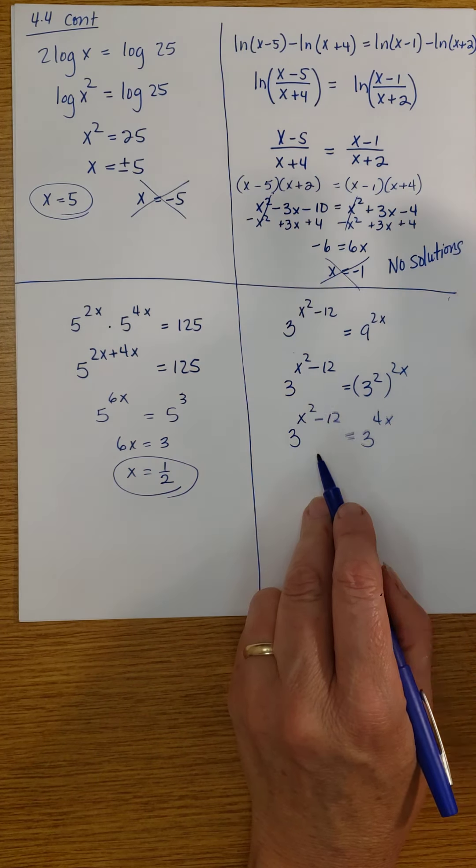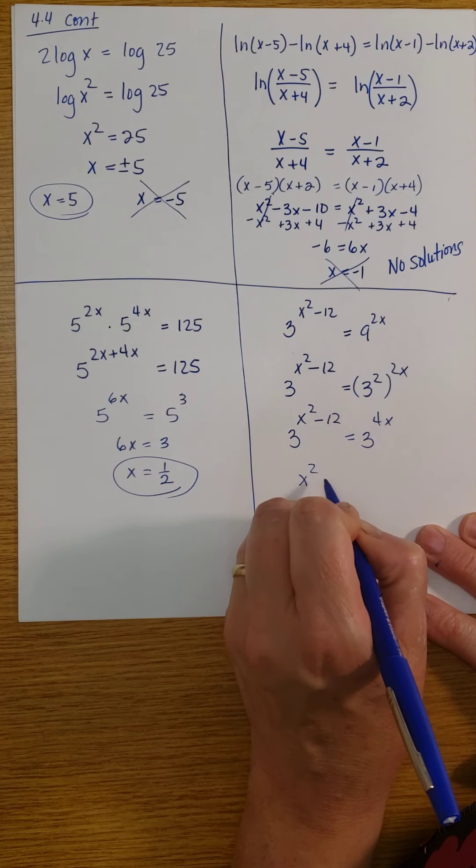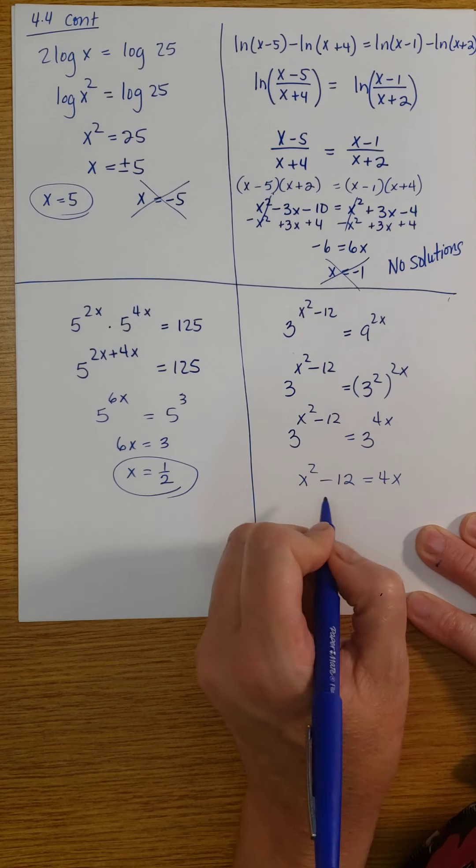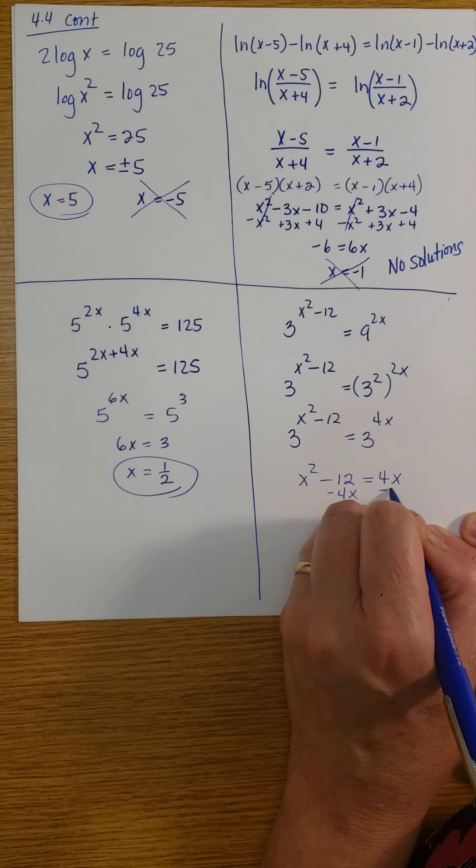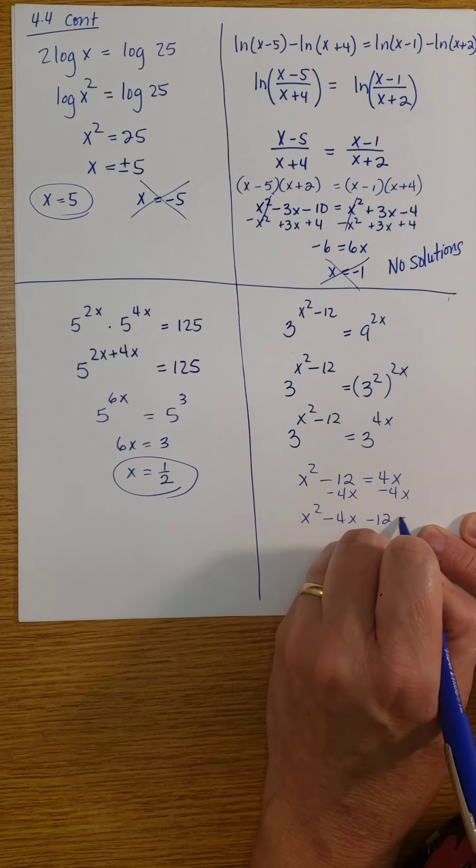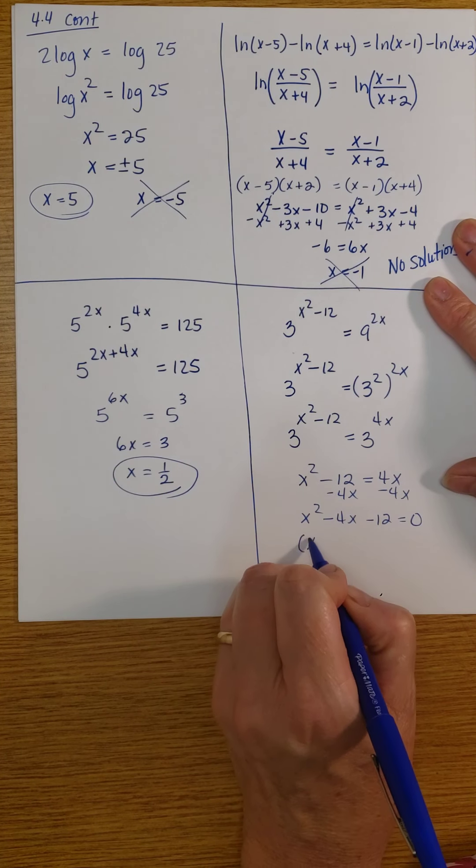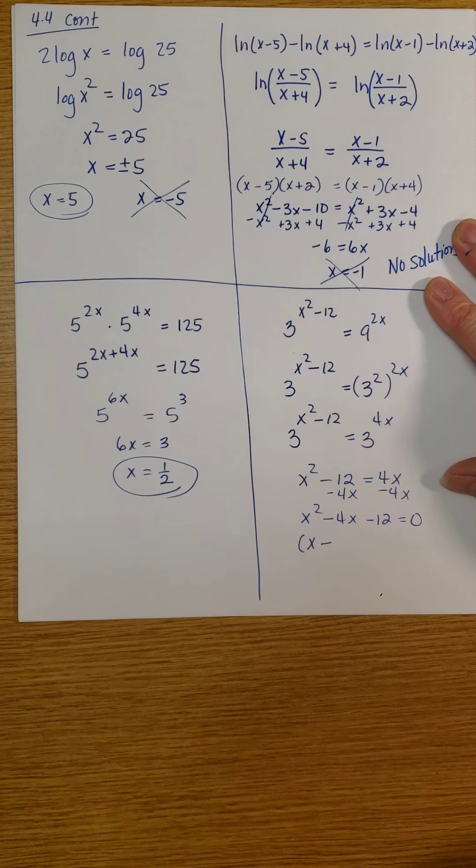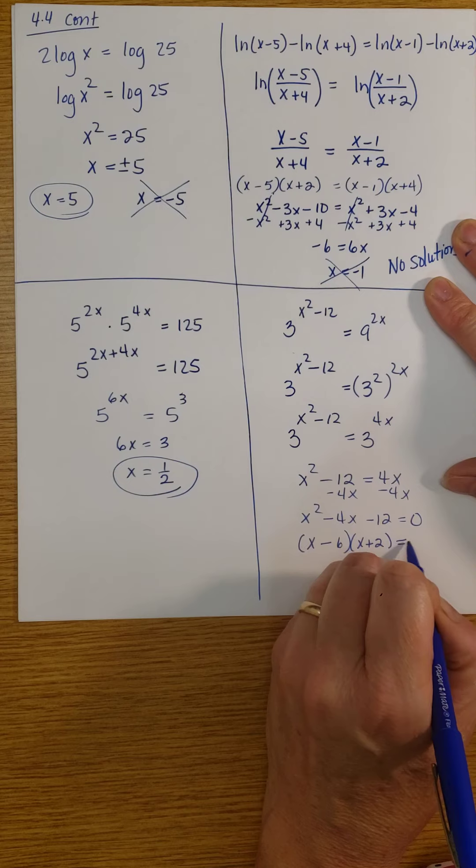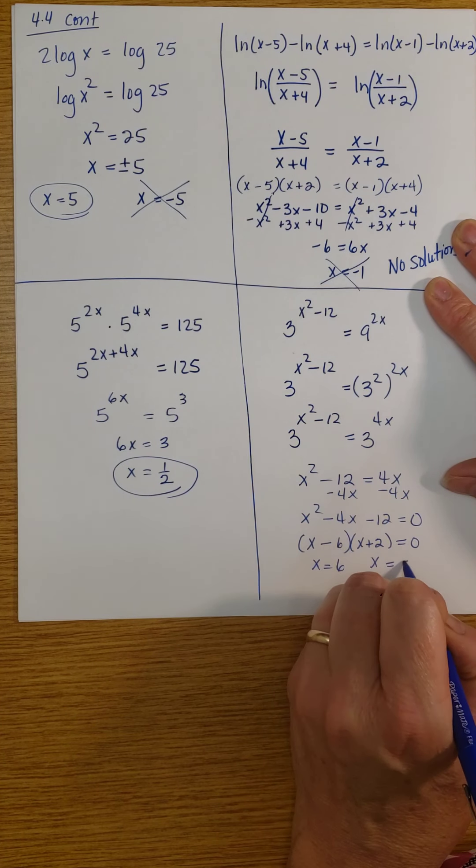The bases are the same now, so I can go ahead and equate the exponents. That gives me x squared minus 12 equals 4x. Subtracting 4x from both sides, I get x squared minus 4x minus 12 is equal to 0. And I'm going to go ahead and factor. This becomes x minus 6 times x plus 2 is equal to 0. So x could equal 6 or x equals minus 2.